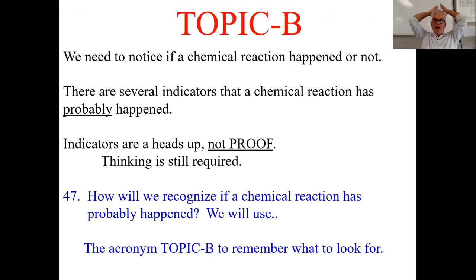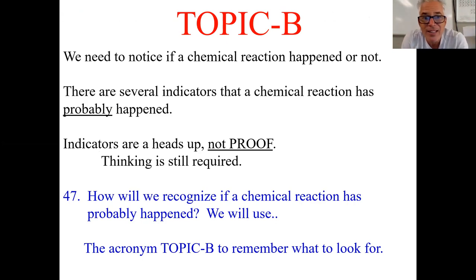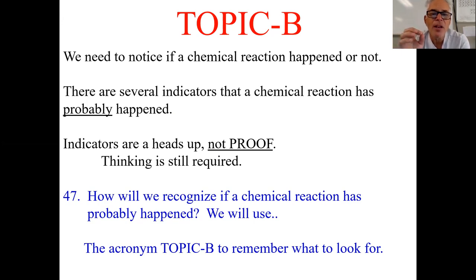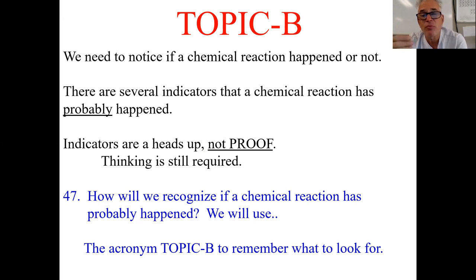TOPIC B is an acronym I made up. When you see these six things happen in class, a chemical reaction has probably occurred. They're indicators that a chemical reaction probably occurred — but not proof. Sometimes something will happen and you think 'oh yeah, color change,' but it really was a physical change. But if you see the TOPIC B indicators in the lab, pay attention because chemistry has probably just happened, not a physical change.